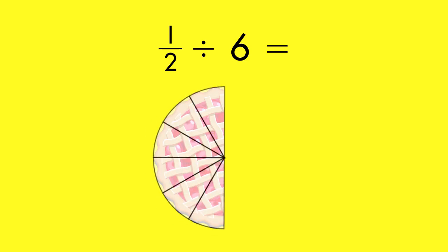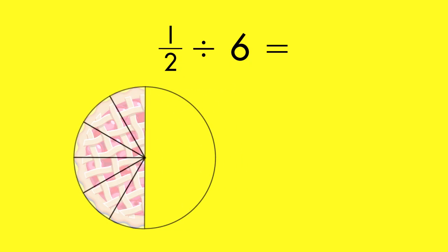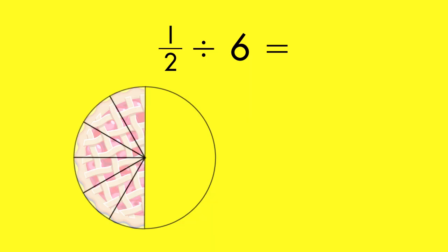Now, if the half contains 6 equal parts, how many equal parts are there in the whole pie? You know 2 halves make a whole, so just double the number of slices to get 12.